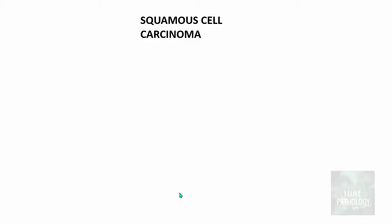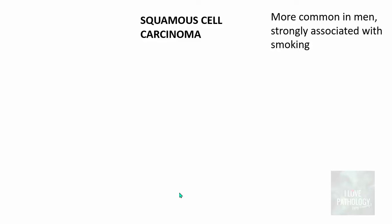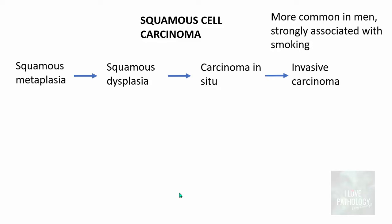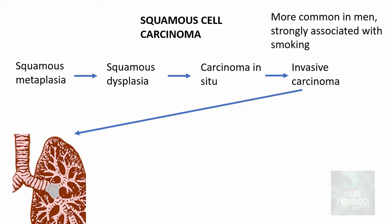The second major type is squamous cell carcinoma, more common in men and strongly associated with smoking. Smoking irritates the respiratory lining epithelium, causing squamous metaplasia. If smoking continues, squamous metaplasia progresses to squamous dysplasia, then carcinoma in situ, and finally invasive carcinoma. If the invasive cancer is located within the bronchial lumen, it grows as a solid intraluminal obstructive mass.